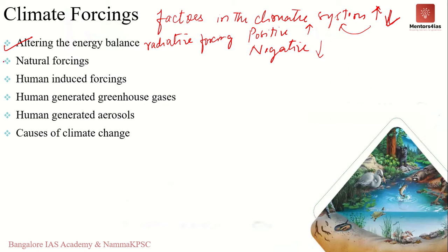Natural forcings include changes in the amount of energy emitted by the sun, slow variations in the earth's orbit, and volcanic eruptions. Since the start of the industrial revolution, the only natural forcing with long-term significance has been a small increase in solar energy reaching the earth. However, this change is not nearly enough to account for current warming. Natural forcings are very slow and very small compared to human-induced forcings.